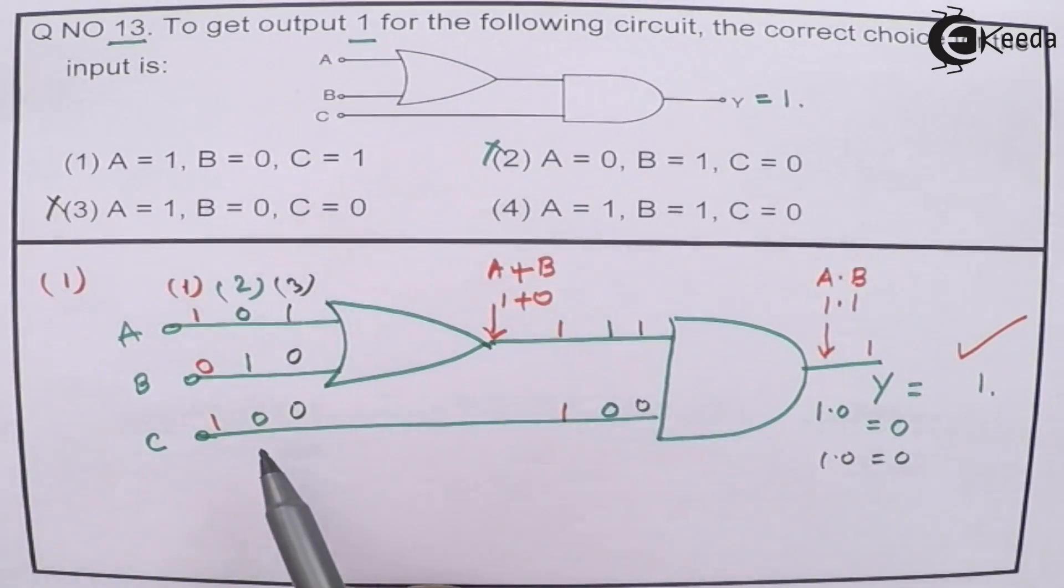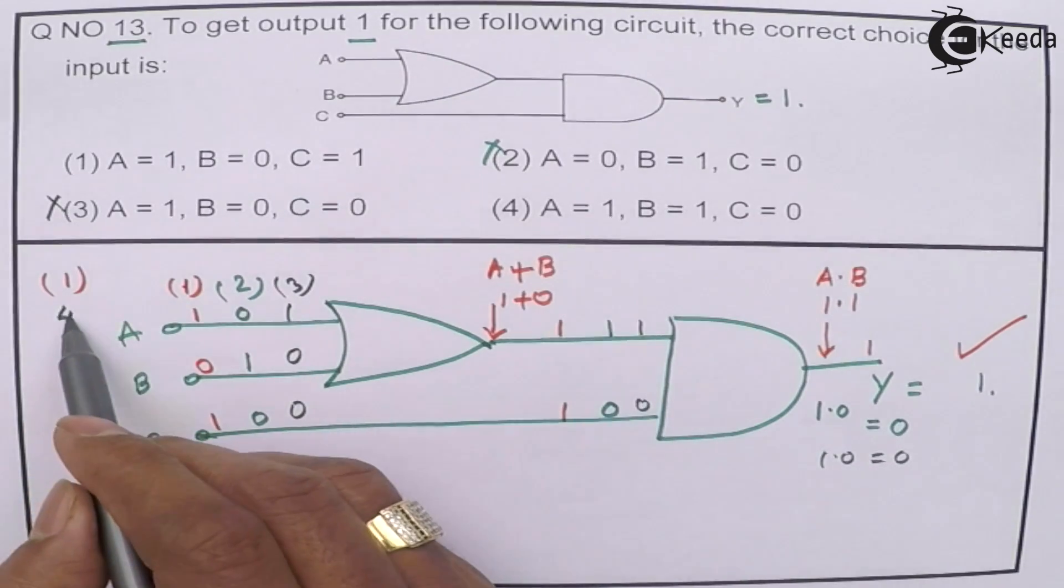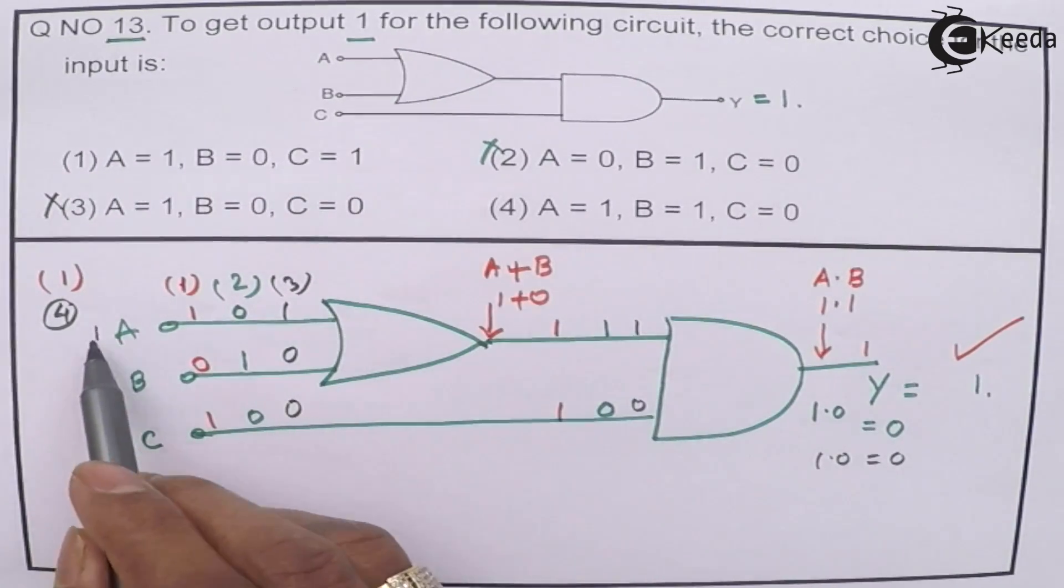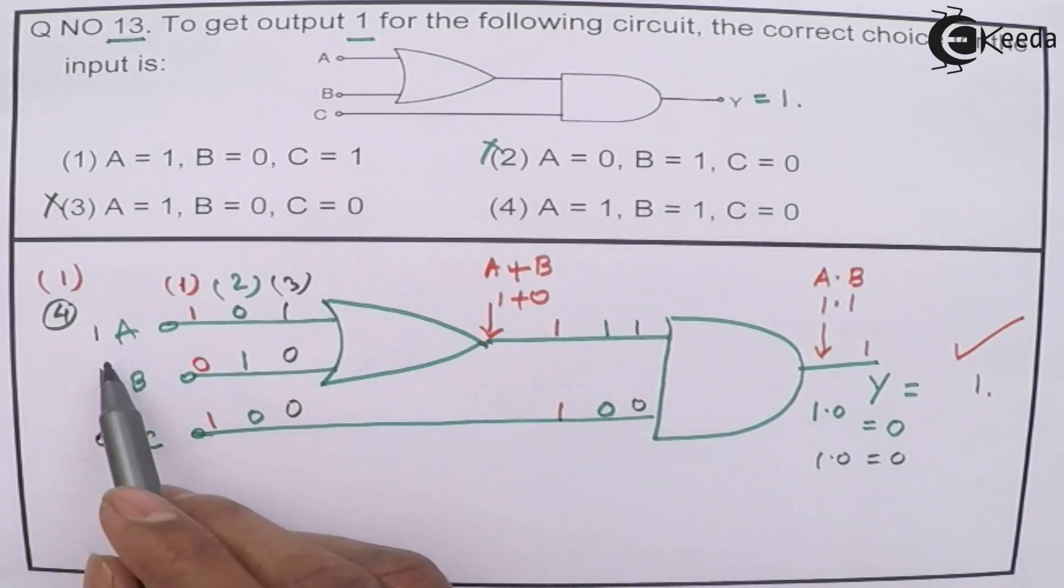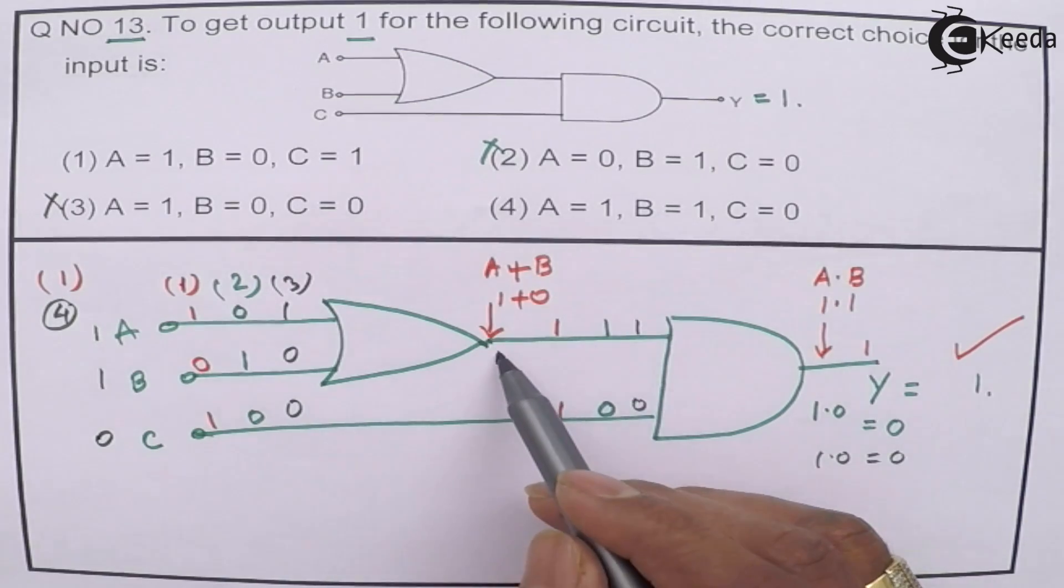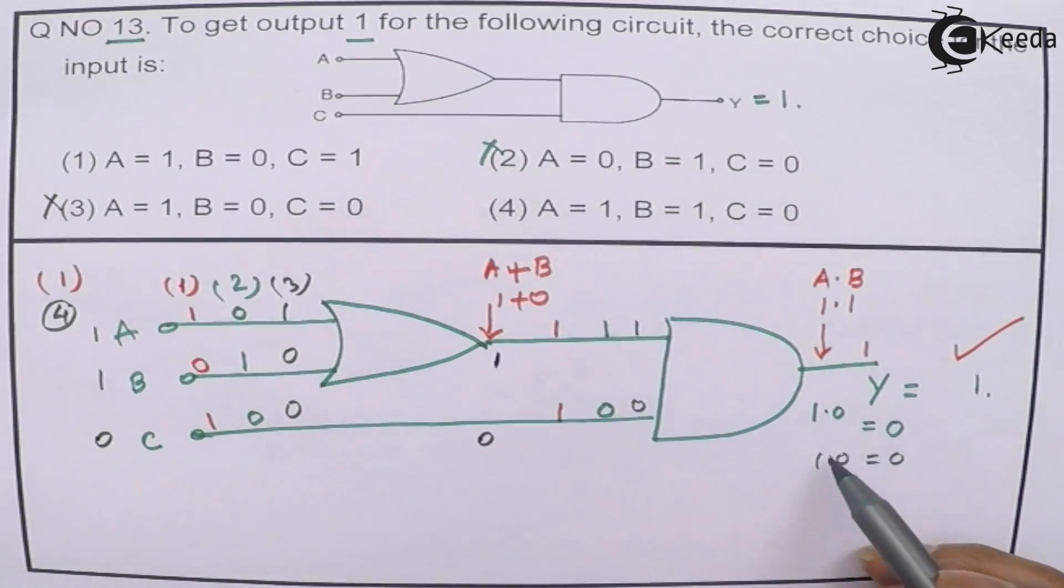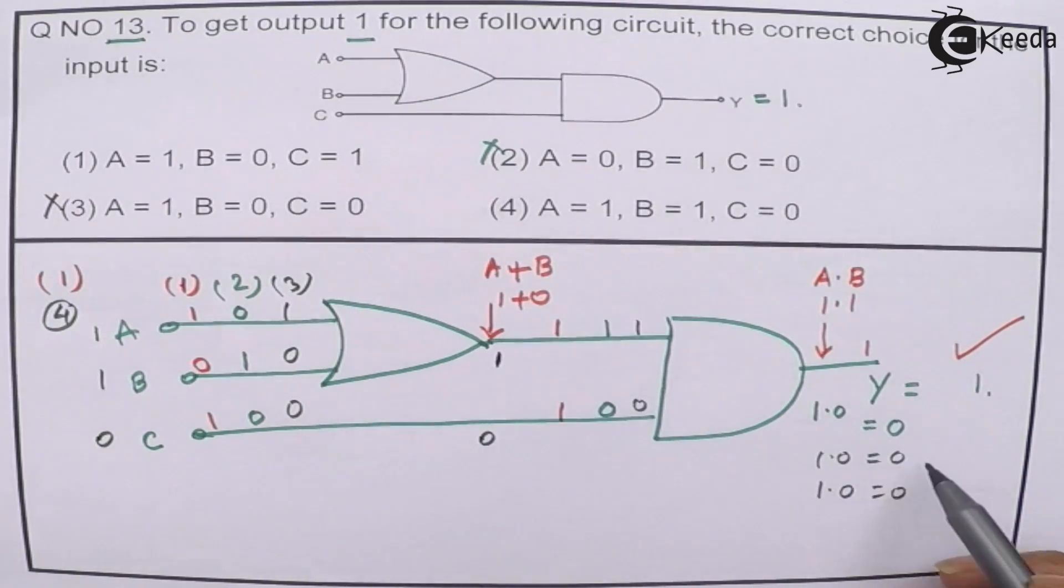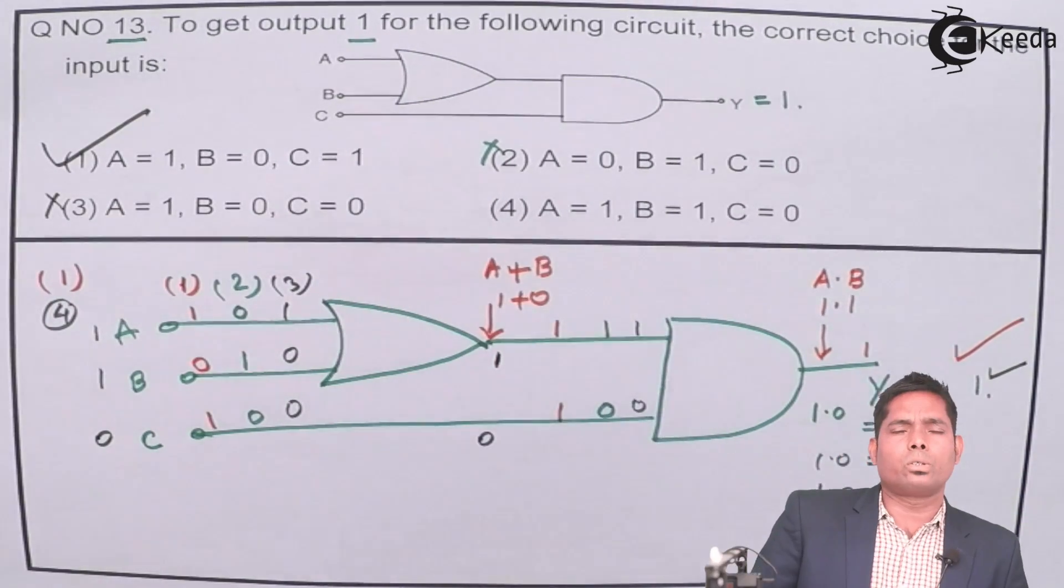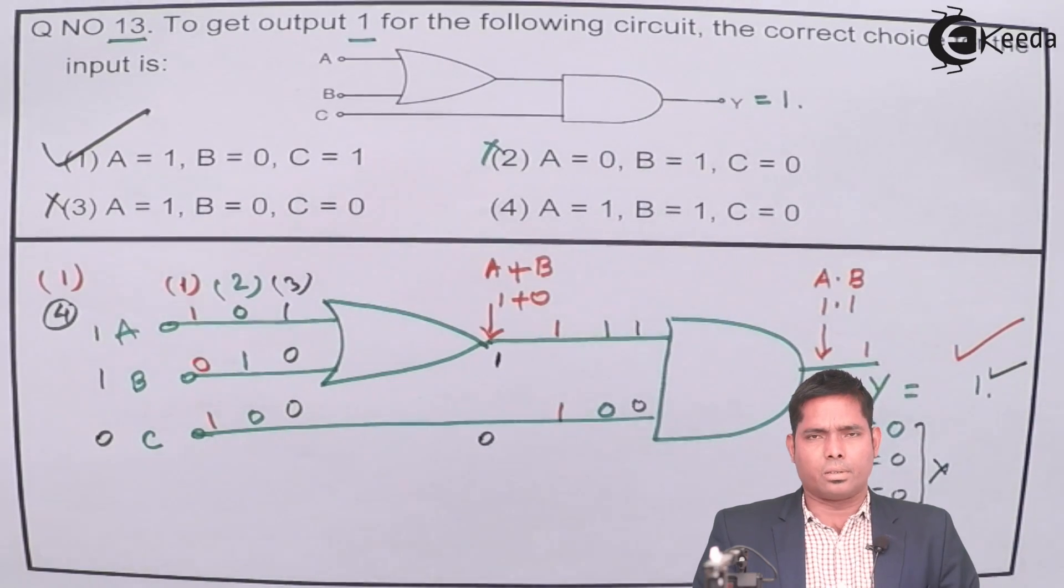Fourth option: it is 1, 1, 0. I will put 1 here, 1 here, 0 here. 1, 1 will be 1. This will be 1 definitely. This will be 0. Again, I will get 1, 0, which is 0. So these three are not the options. Option number 1 is the only option that gives you the right answer.